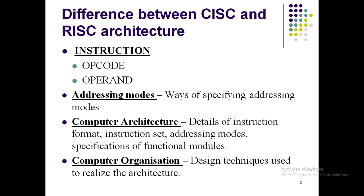Moving ahead from module one, there is a small topic wherein we discuss various computer architectures — basically processor architecture. To understand processor architecture, you first need to understand what an instruction is. An instruction is nothing but a command given to the processor, using which the processor carries out operations like addition or copying from memory. An instruction consists of two parts: one is called the opcode and the other is called the operand.